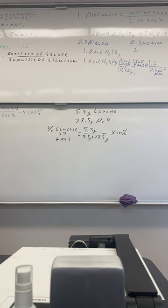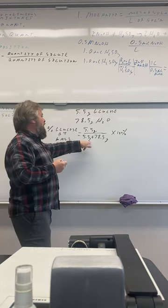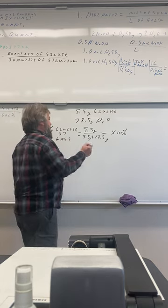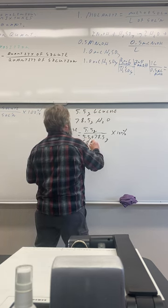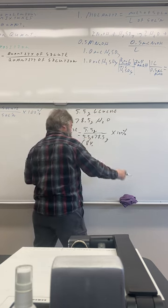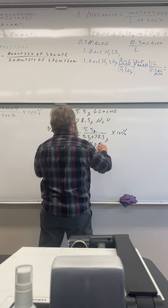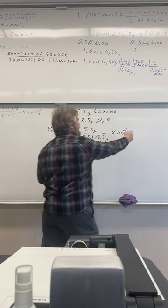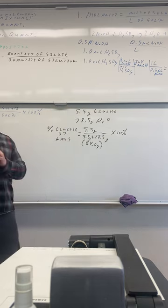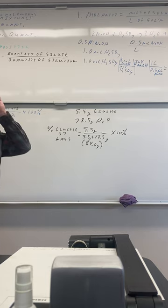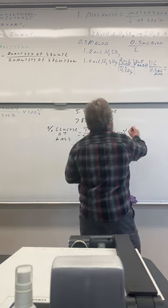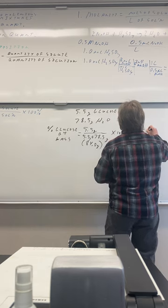Take out your calculators. What is 5.5 divided by 84.0, times 100%? That's 6.5%. And because we're talking about something specific, we need to indicate two things: the solute is specific, and the way we determine the percentage is specific. So we write '6.5% glucose by mass,' or 'mass percent glucose.' We cannot just write 6.5% — if we measured by volume that would be a different number.